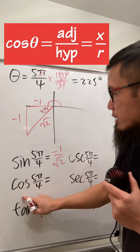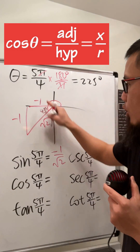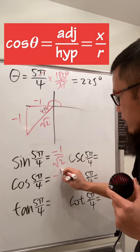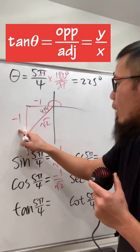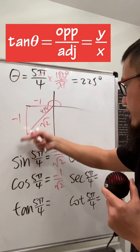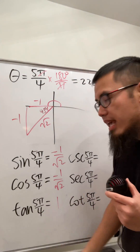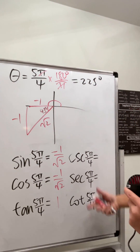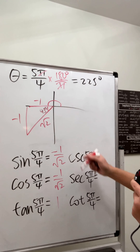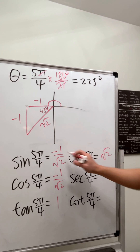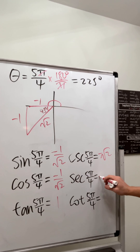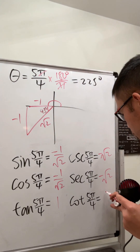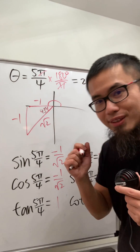Cosine is x over r, which is negative one over square root of 2. Tangent is y over x — negative one over negative one is 1. For the reciprocal functions, cosecant is square root of 2 over negative one, so it's negative square root of 2. Likewise secant is the same, and cotangent is 1 over 1, which is just 1. We are done.